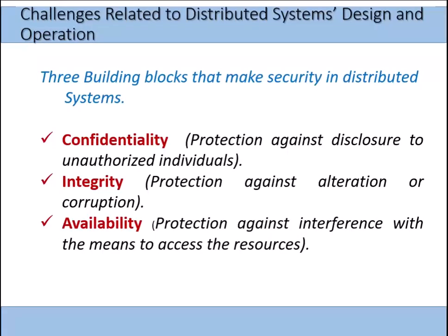There are three building blocks that make security in distributed systems: confidentiality, integrity, and availability. Confidentiality is protection against disclosure to unauthorized individuals; integrity is protection against alteration or corruption; and availability ensures access to resources. If components cannot access resources, an availability problem arises, and an attacker can attack any of these properties.